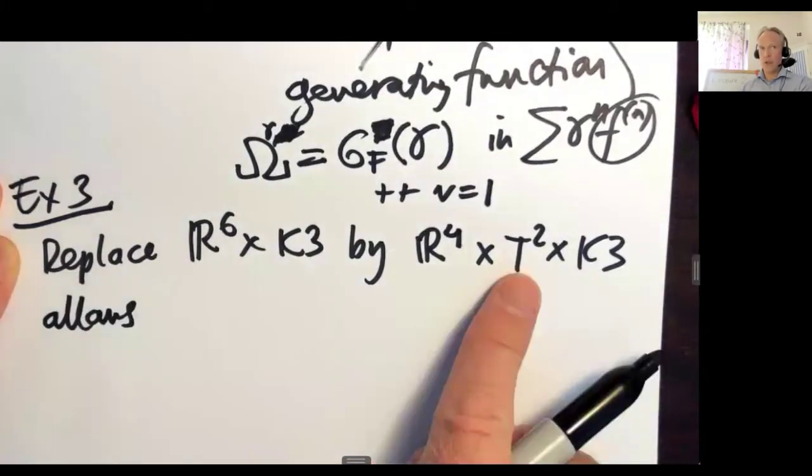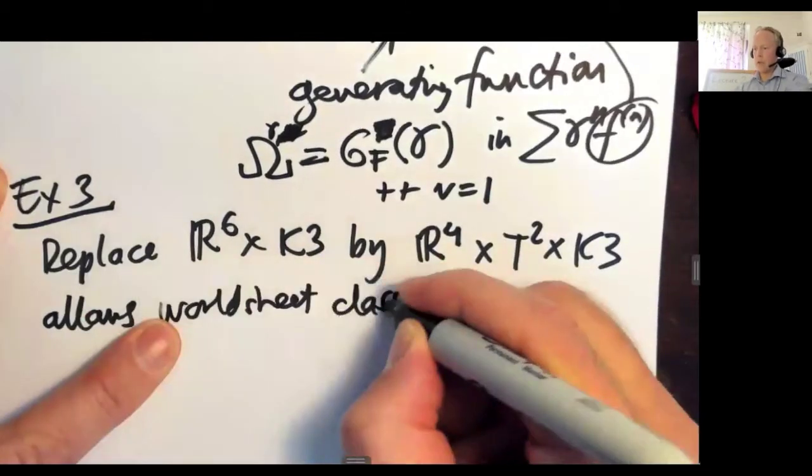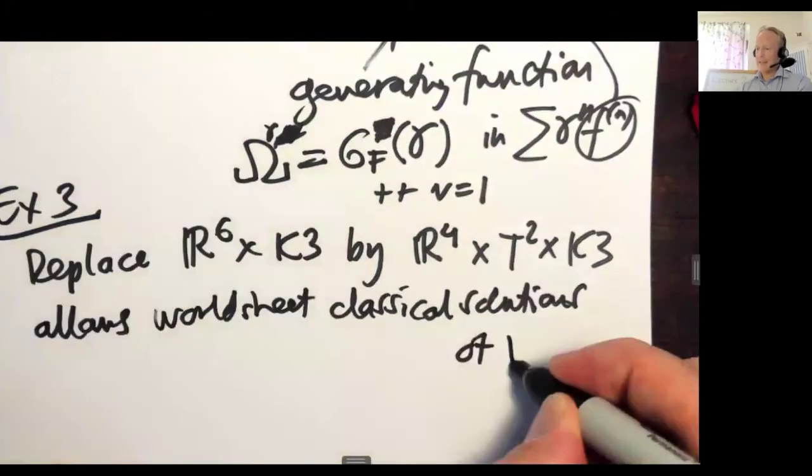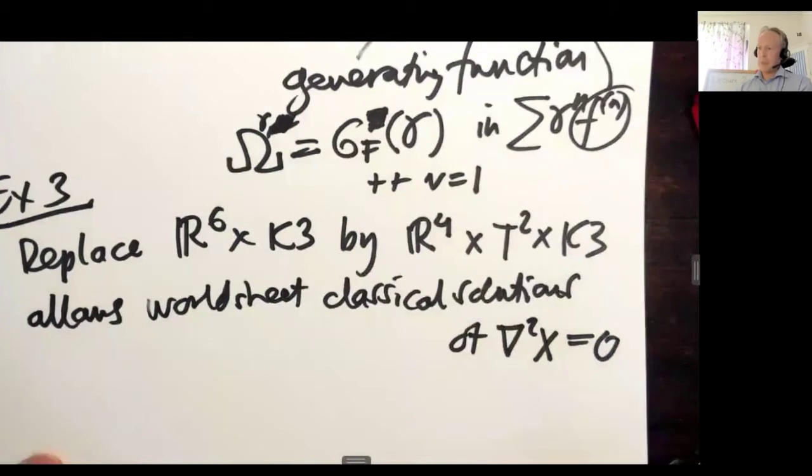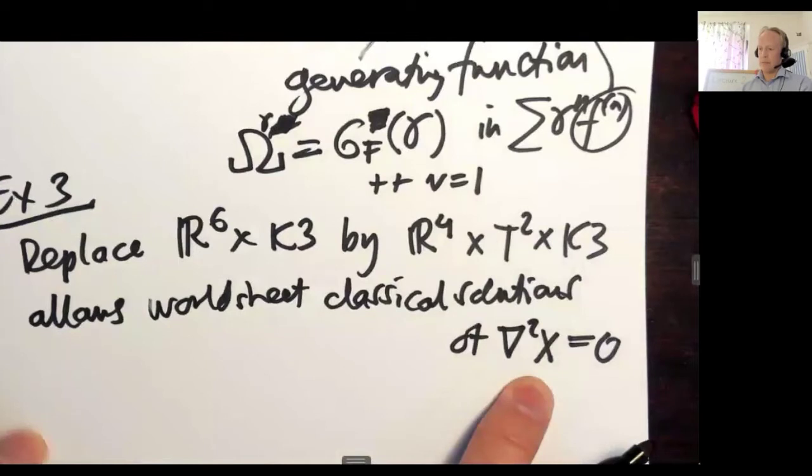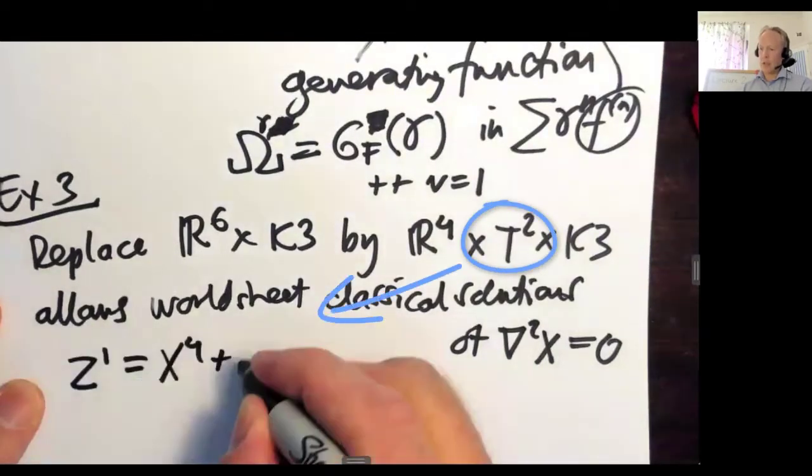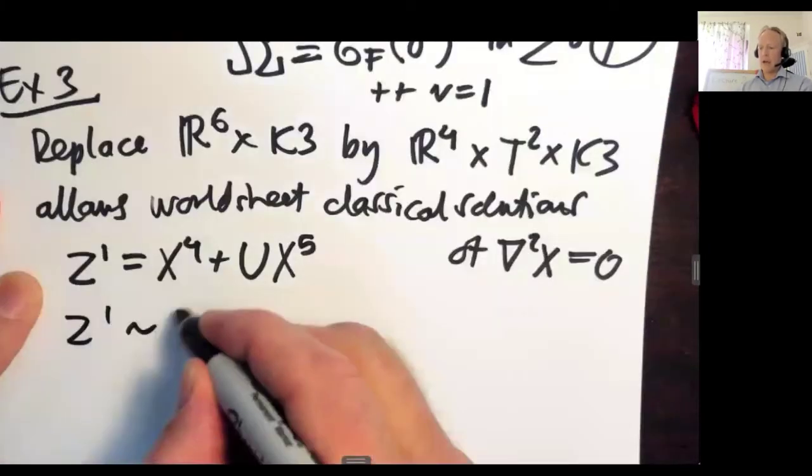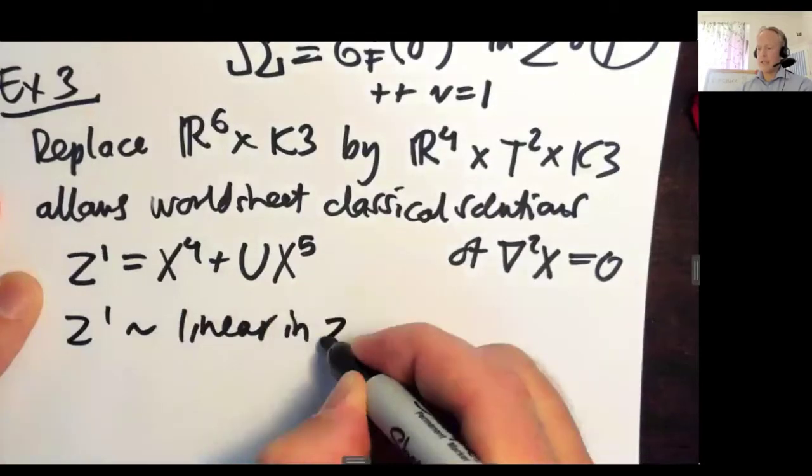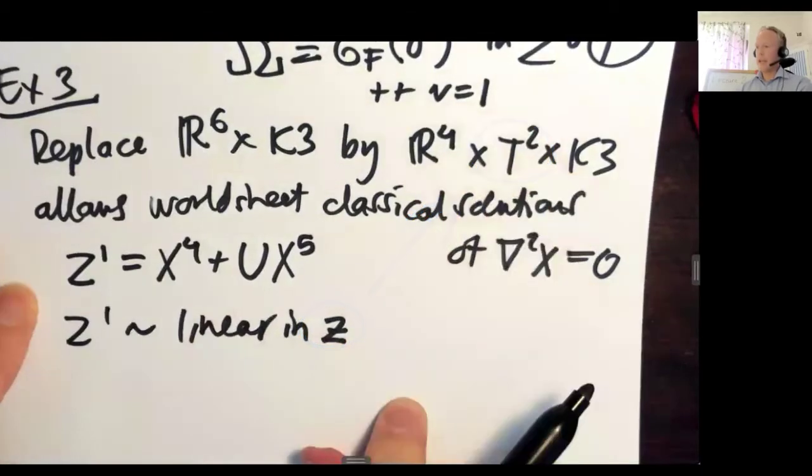This two torus now allows world sheet classical solutions, which we usually refer to as instantons. We had this equation of motion on the world sheet, if you remember. The Laplace equation on the world sheet has a pretty trivial solution. Because this is a second-order differential operator, you have a linear solution. And if we make these complex combinations that we talked about before, X4 plus some constant U times X5, then if Z1 is linear in the world sheet coordinate Z, remember this is the embedding from Z to target space.